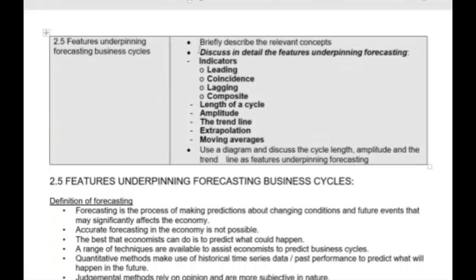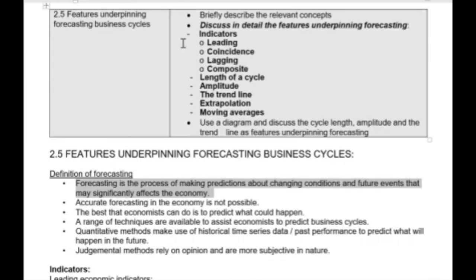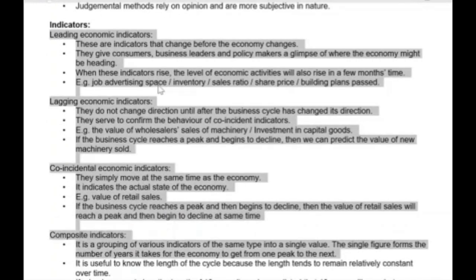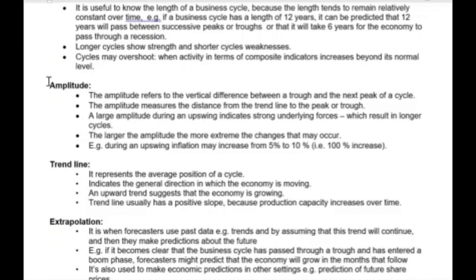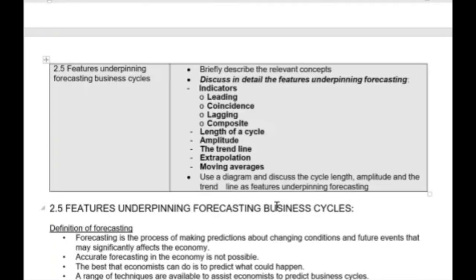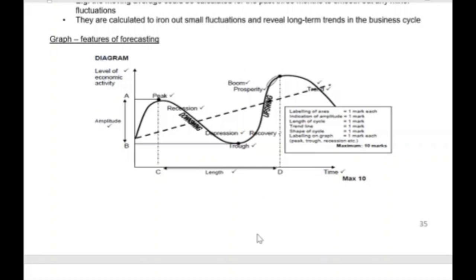This is a possible long question for chapter two — question two for paper one. To structure your answer: the first bullet is your introduction, then study the content as if it is your essay question. Know the four different types of indicators and give examples of them. Know the length of the business cycle and amplitude. Be careful — if they don't ask you to draw a diagram, don't draw one because you won't get marks for it.